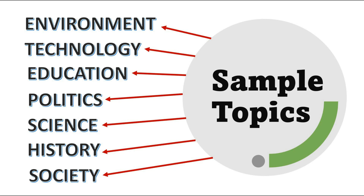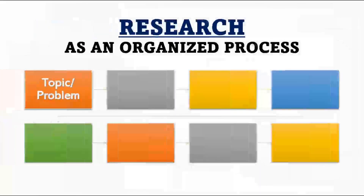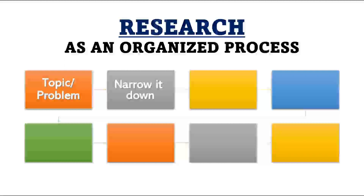Once you have listed the topics you are interested in, the next step is to narrow them down. The examples of topics provided are broad ones. A broad topic is one where too many different ideas and information would exist — it is composed of multiple smaller topics within. As such, you need to narrow them down into a specific, more focused one. A topic is specific when it is precise and centered on one particular central idea or concern.